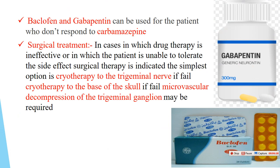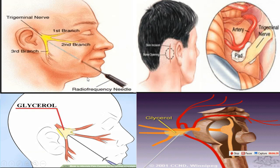If the patient cannot tolerate the side effects of carbamazepine or does not respond to it, other drugs such as baclofen and gabapentin are also effective. Surgical treatment: In cases where the patient does not respond to medication, surgical options include cryotherapy — freezing the nerve by inserting a needle or probe near the course of the affected nerve to deaden the irritated nerve and relieve the pain.